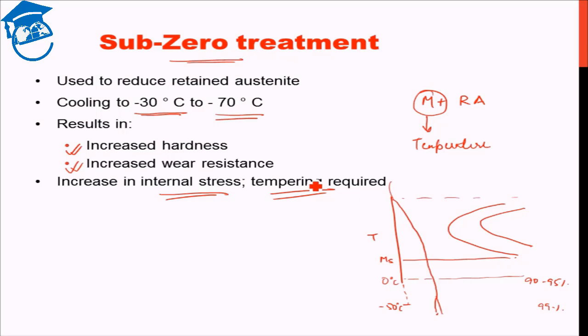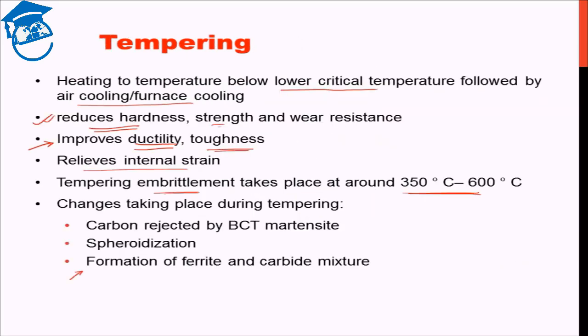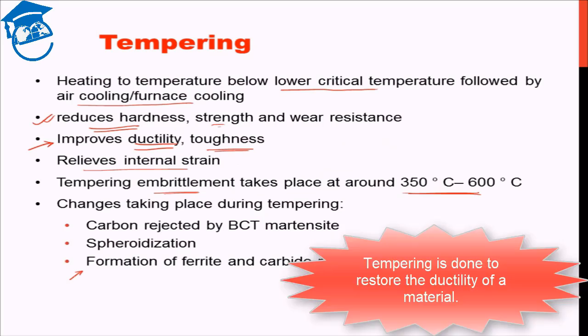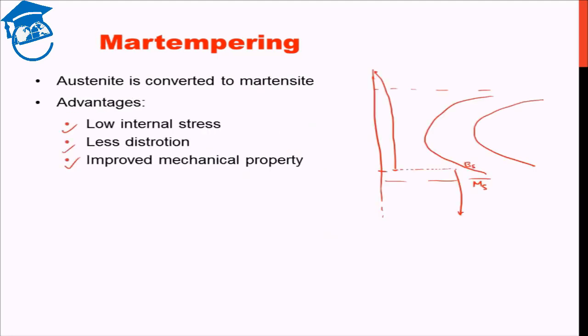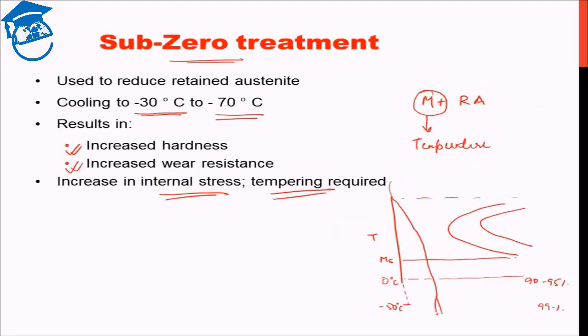So, this brings us to the end of the discussion on different heat treatment processes. Today we began by discussing tempering process which is used to restore some ductility in martensitic structure. We saw the bainite formation process which is known as austempering. We saw martensite formation process which is an alternative process known as martempering. And finally, to get high percentages of martensite and convert the retained austenite to martensite further we let the material undergo subzero treatment.